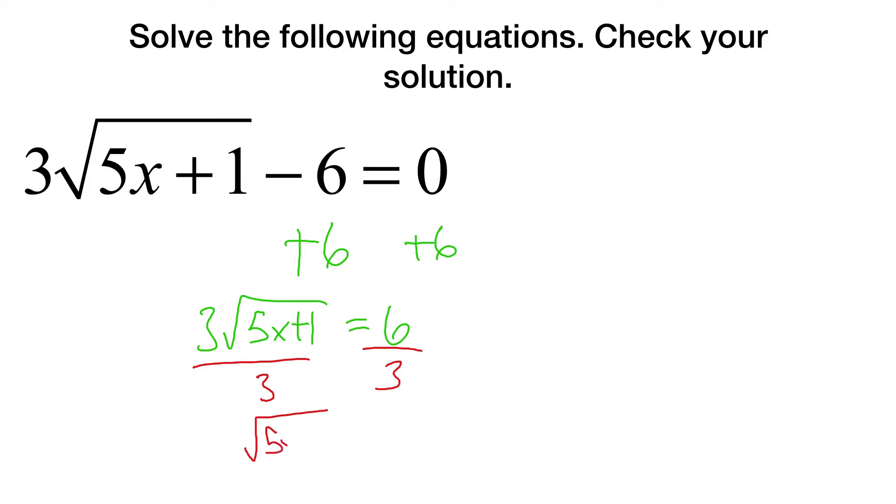Then we're going to divide by 3. The square root of 5x plus 1 equals 2. Then we're going to square both sides. 5x plus 1 is 4. Subtract 1. 5x equals 3. Finally, divide by 5.